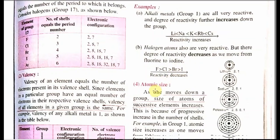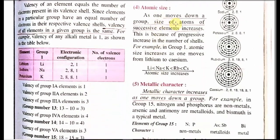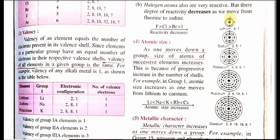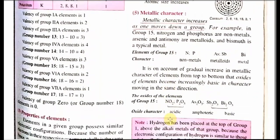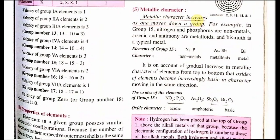Next point is atomic size. As we go down the group, atomic size increases. You can see in the figure: lithium has only 2 shells, so size is smaller; potassium has 4 shells, so size is bigger; cesium has 6 shells, so cesium's size is the biggest. Next point: metallic character — if you go down the group, metallic character increases. This will also be applicable in Class 10. As an example of group 15: nitrogen and phosphorus are non-metals at the top, but as we go down to bismuth, it is a metal.